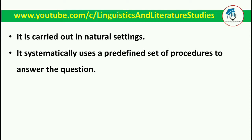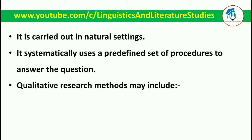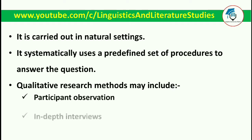There are different methods to carry out qualitative research. The first one is participant observation, in which a researcher silently observes the participants. For example, if we want to know a culture's social realities, we will conduct participant observation there — we will silently observe people and note their behaviors.